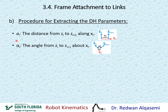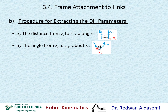Alpha_i is the twist angle for link I, which is the angle from z_i to z_{i+1} about x_i. If this is z_i and this is z_{i+1}, and x_i is either going into the screen or out of the screen, then alpha_i is the angle between z_i and z_{i+1} about x_i. For these two link parameters, we use the same axes z_i and z_{i+1}, measured along or about x_i.